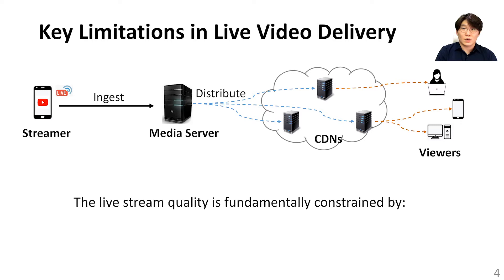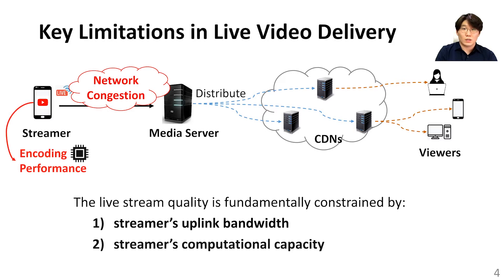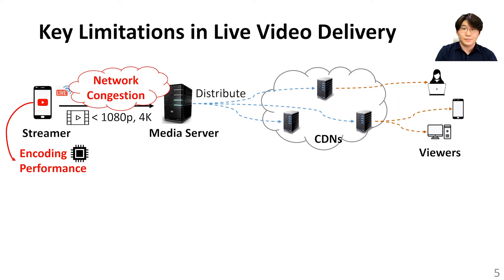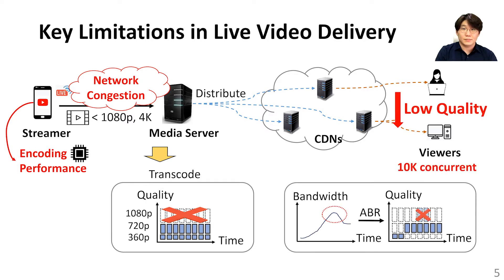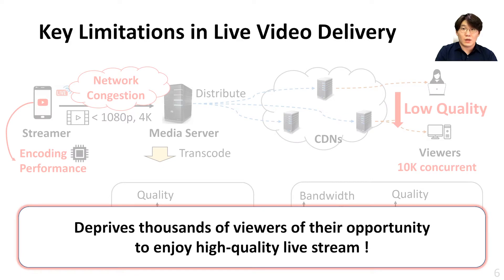However, there still exist key limitations in end-to-end live video delivery. The stream quality is fundamentally constrained by the streamer's uplink bandwidth and its computational capacity. For example, if the network bandwidth between the streamer and the media server is scarce, or if the streamer lacks computing power to encode the live stream in real-time, the ingest stream quality suffers by limiting transcoded options and restricts the quality of the entire delivery downstream, potentially depriving thousands of viewers of high-quality live stream.